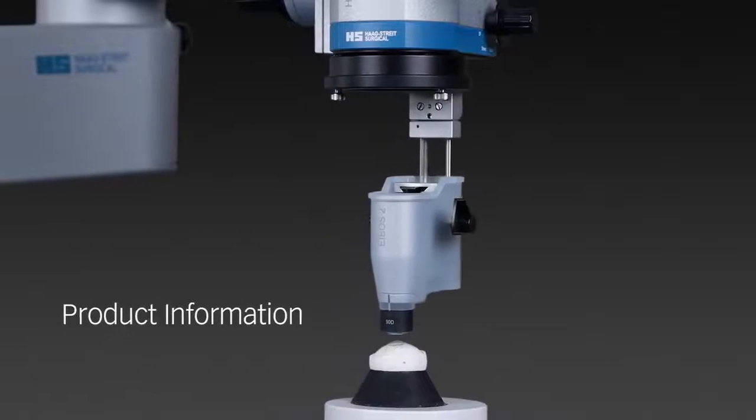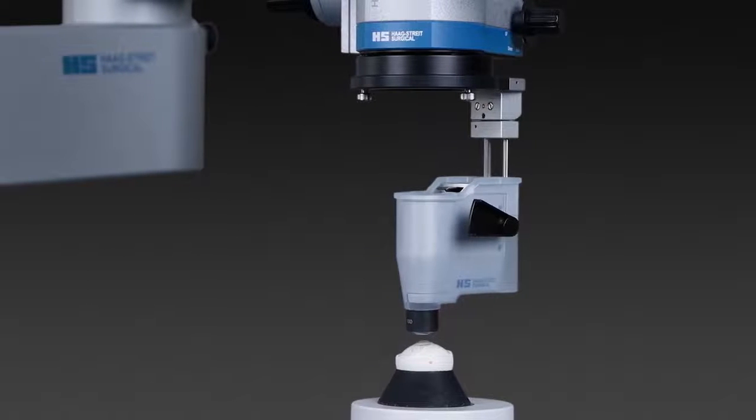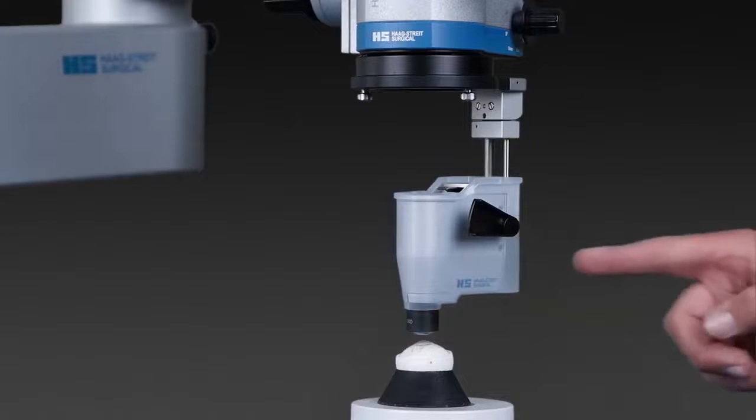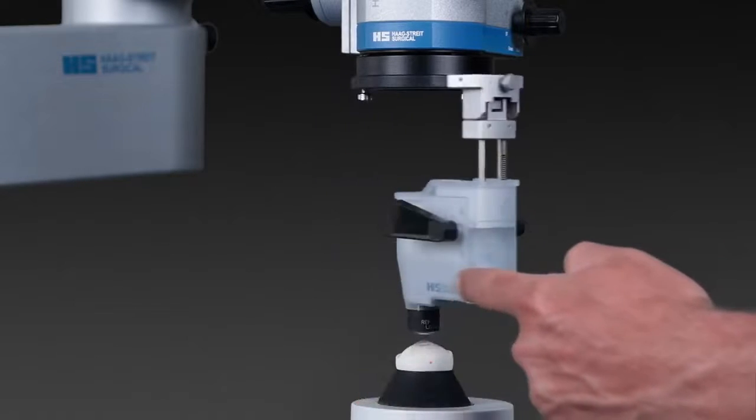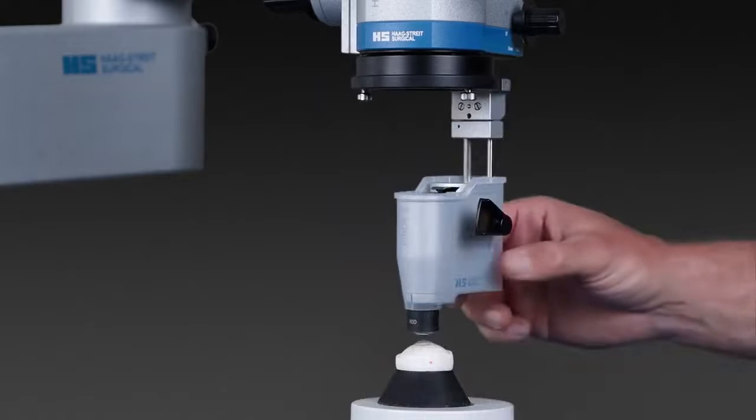The IBIS II is a fundus observation system for intraoperative posterior segment viewing. The inverter body is very slim, which allows the surgeon at low magnification to simultaneously visualize the fundus and the incision area.